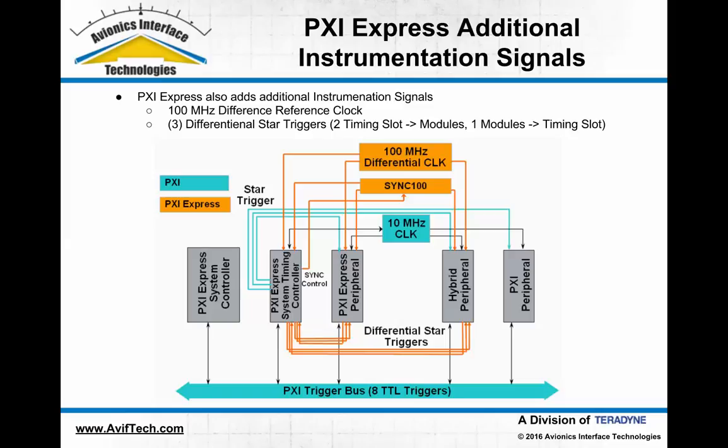In addition to adding PCI Express, the PXI Express evolution of the PXI backplane also added additional instrumentation signals. One of these was a 100 megahertz reference clock — a differential clock. The original 10 megahertz clock was referenced to ground, which causes complications at higher frequencies. PXI Express introduced differential clocking and synchronization, allowing a 100 megahertz reference clock for higher resolution synchronization across all modules in the system.